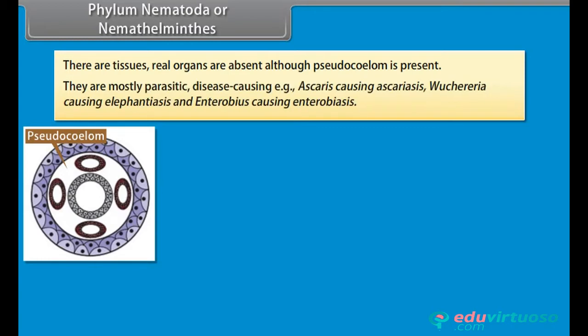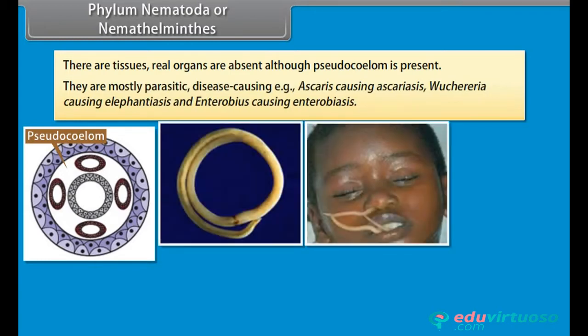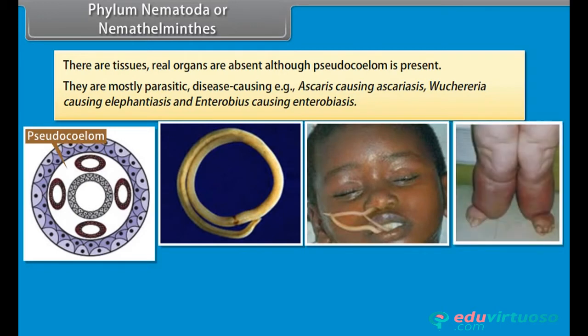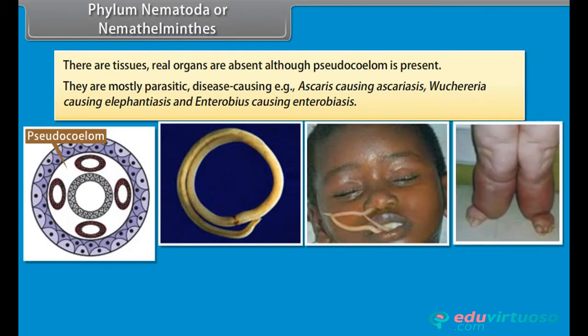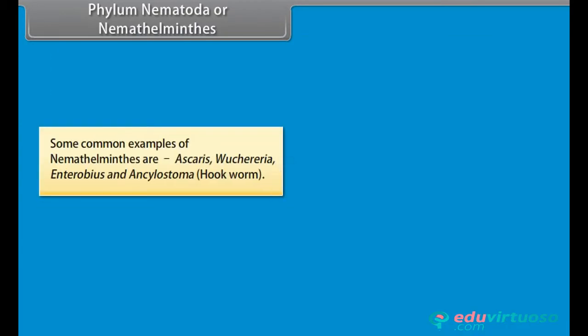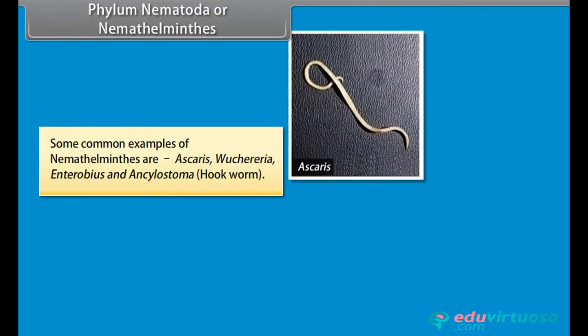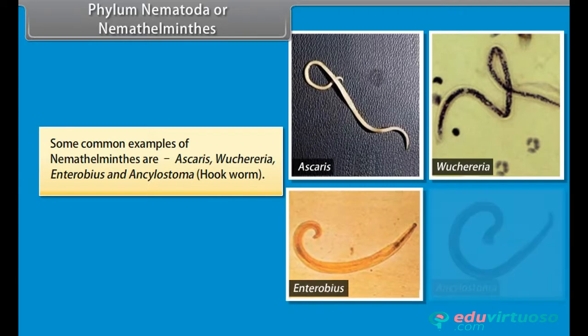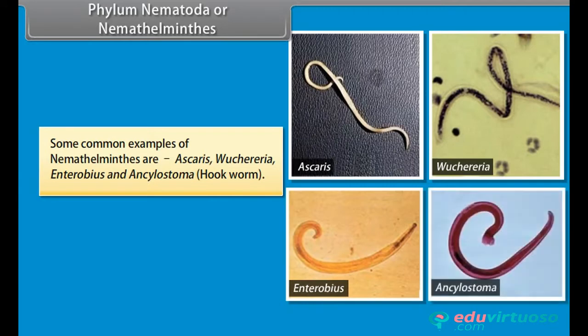They are mostly parasitic and disease-causing, for example Ascaris causing ascariasis, Wuchereria causing elephantiasis, and Enterobius causing enterobiasis. Some common examples of Nemathelminthes are Ascaris, Wuchereria, Enterobius, and Ancylostoma, hookworm. Phylum Annelida.